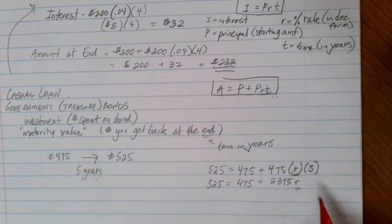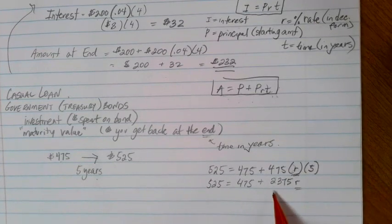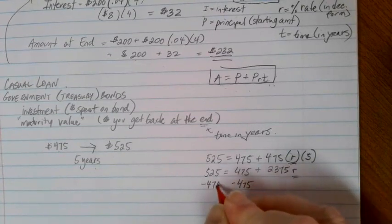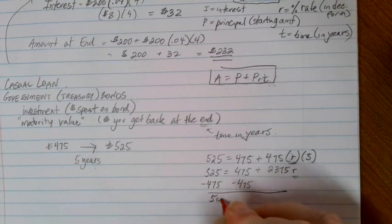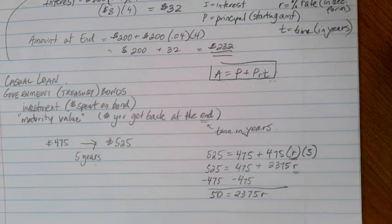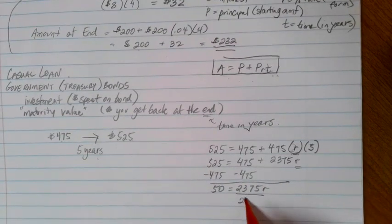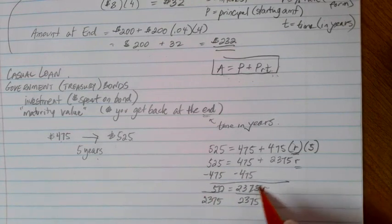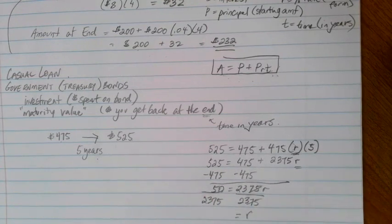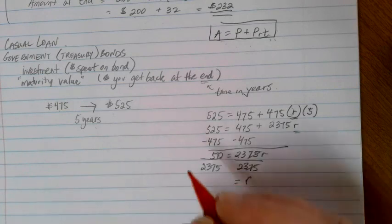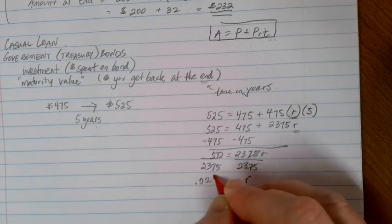Now I just need to get the R by itself. There's two numbers on the same side. We have to get rid of them one at a time. First, we're going to subtract 475 from each side, which is going to give me 50 on the left, and I'm still left with that 2375 R on the right. Then I'm going to divide by that 2375 on each side, and I'm going to be able to figure out what my R value is. So if you go to your calculator, take 50 divided by 2375. I end up with 0.0211.